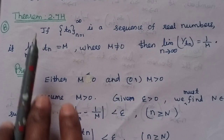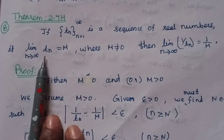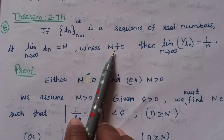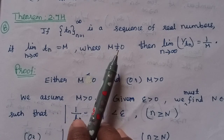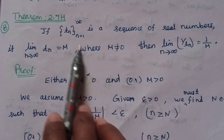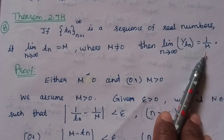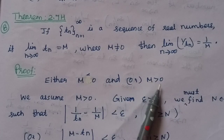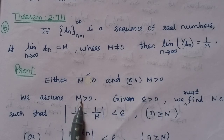...then we can see 1 by tn — we can see reciprocal, product, addition, scalar multiplication, subtraction, multiplication, square, division. If m is not equal to 0, then limit n tends to infinity of 1 by tn equals 1 by m. Here m is not equal to 0, or m greater than 0.